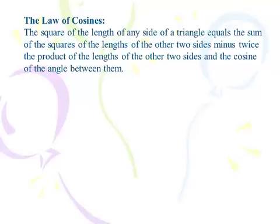The square of the length of any side of a triangle equals the sum of the squares of the length of the other two sides minus twice the product of the length of the other two sides and the cosine of the angle between them. There. Now you know the law of cosines. Of course that's ridiculous. Let's show you an equation.